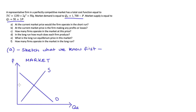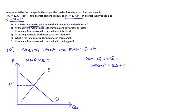One immediate thing you can see from this sketch is that we can find the market price at the intersection of market demand and market supply. Setting demand equal to supply: 1700 minus P equals 50 plus 2P. Adding P to both sides gives 1700 equals 50 plus 3P. Taking 50 away from both sides gives 1650 equals 3P. Dividing both sides by 3 gives P equals 550.